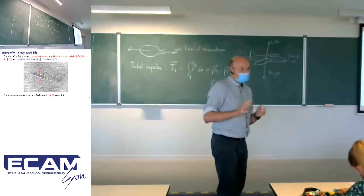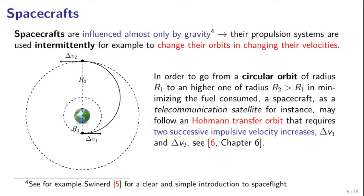What happens in vacuum? In vacuum it's quite different because almost the only force applied to your vehicle is gravity. Most of the time when you use your propulsion engine, it's to change your orbit. A classical example is when you want to put a satellite into a specific orbit — for example, a geosynchronous orbit, meaning your satellite will always have the same position relative to Earth over time.